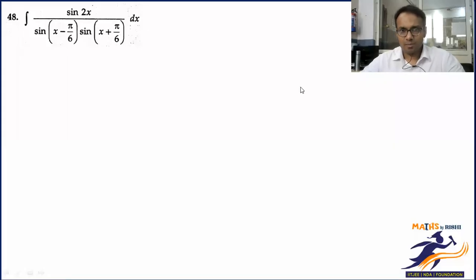If you just remember those trigonometrical identities things seem very interesting. Denominator ko dekhke mujhe yaad aa raha hai sin(A - B) into sin(A + B), which is equal to sin²A - sin²B, or you can write it as cos²B - cos²A depending upon the situation.